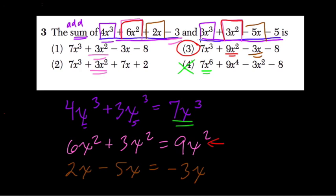And last but not least, we have negative 3 and negative 5. Negative 3, right? Plus, because we're adding negative 5, is negative 8. Or, in this case, minus 8.